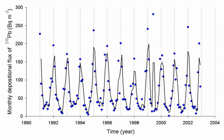Since radon is a colorless, odorless gas, the only way to know how much is present in the air or water is to perform tests. In the United States, radon test kits are available to the public at retail stores, such as hardware stores, for home use, and testing is available through licensed professionals, who are often home inspectors. Efforts to reduce indoor radon levels are called radon mitigation. The U.S. Environmental Protection Agency recommends all houses be tested for radon.